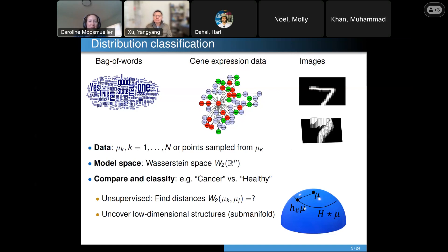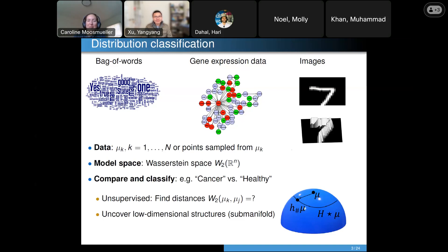The basic idea: we have a specific type of data, a new model space, and we want to do classification — focusing on unsupervised learning. I'll mention that with the framework I'll present, you can also do supervised learning, but that's not the topic of today. If you have any questions, feel free to ask; I don't need to go through all 24 slides.